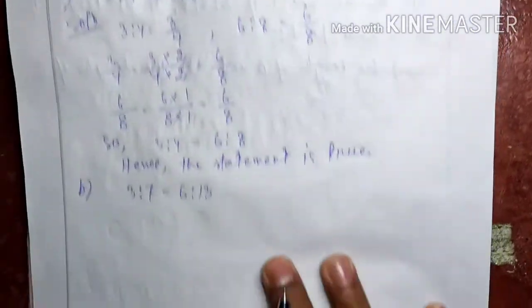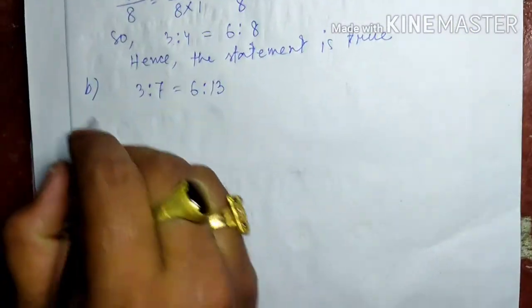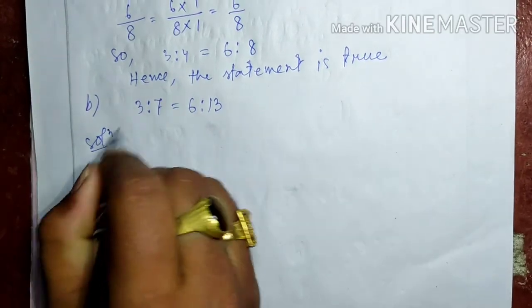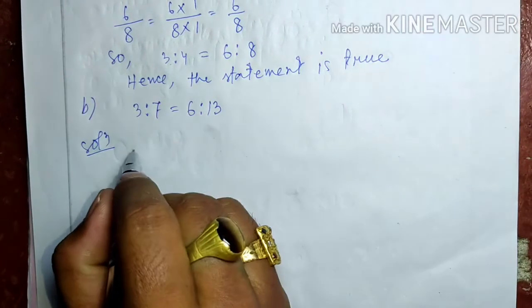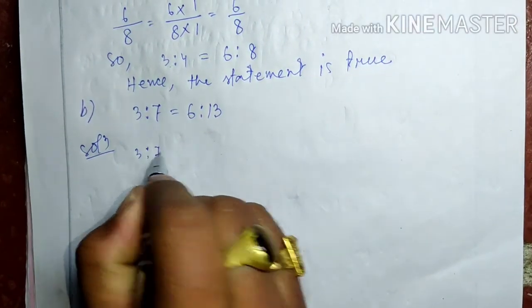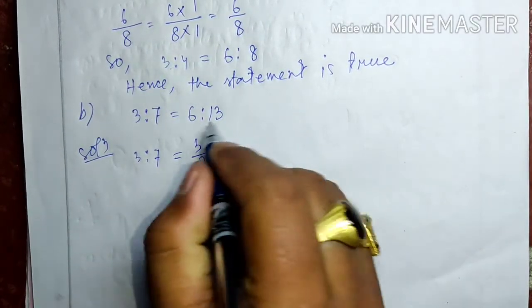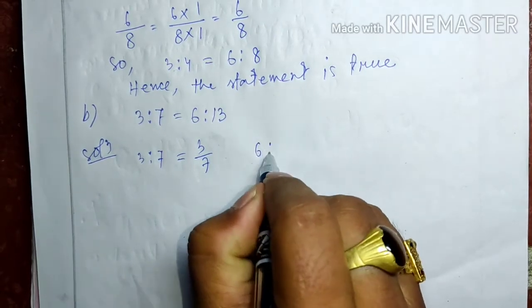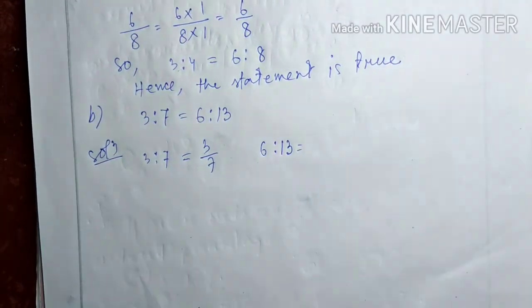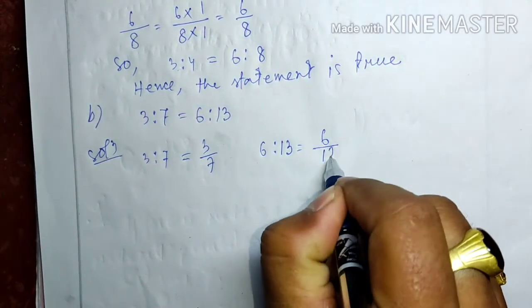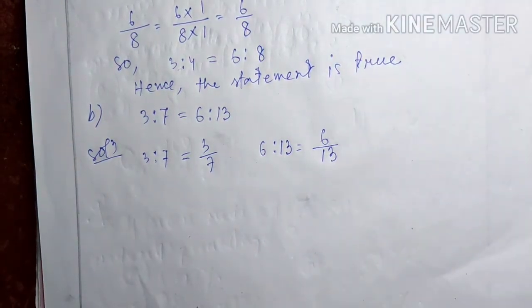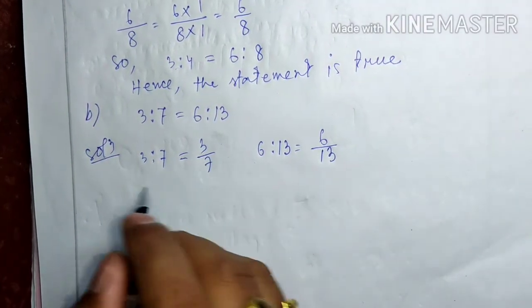Okay, one more question, part b. Use the same method. 3 is to 7, you write down 3 by 7. 6 is to 13, write down 6 by 13. Take the first fraction.